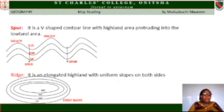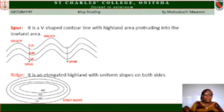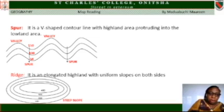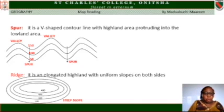A spur is a V-shaped contour line with highland areas protruding into lowland areas. From the diagram, 150 is pointing into 100 and 100 is pointing into 50. After a valley you have a spur, and after a spur you have a valley — but both are V-shaped contour forms. Look at the height values to differentiate between the two.